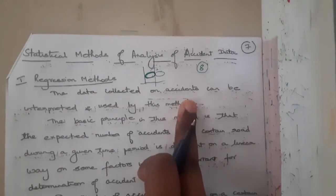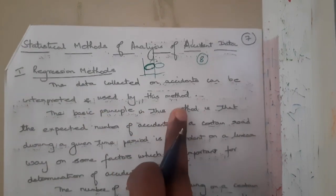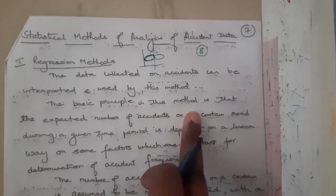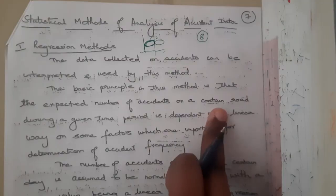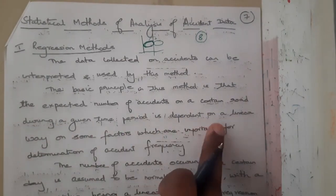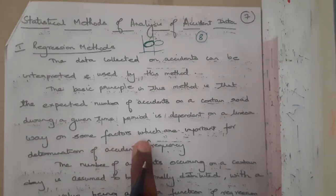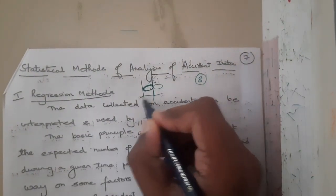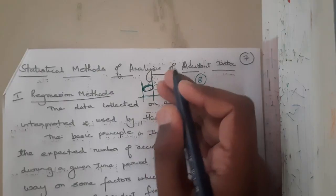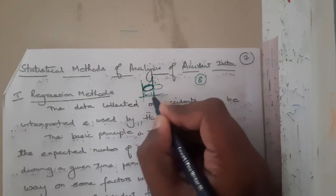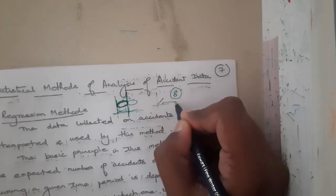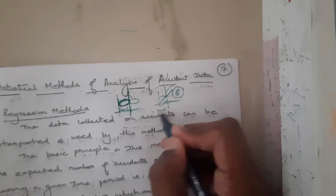The data collected on accidents can be interpreted and used by this method. The basic principle is that the expected number of accidents on a certain road during a given time period is dependent in a linear way on some factors important for determining accident frequency. If data is increasing linearly, you can predict that in the future it will also increase linearly.